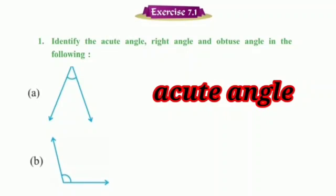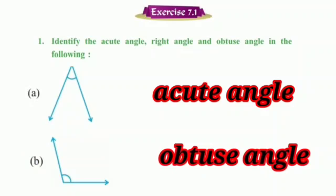Now, let us solve its part B. Here, the given angle is exterior to the right angle. Which means, it is bigger than 90 degree. So, it is an obtuse angle.